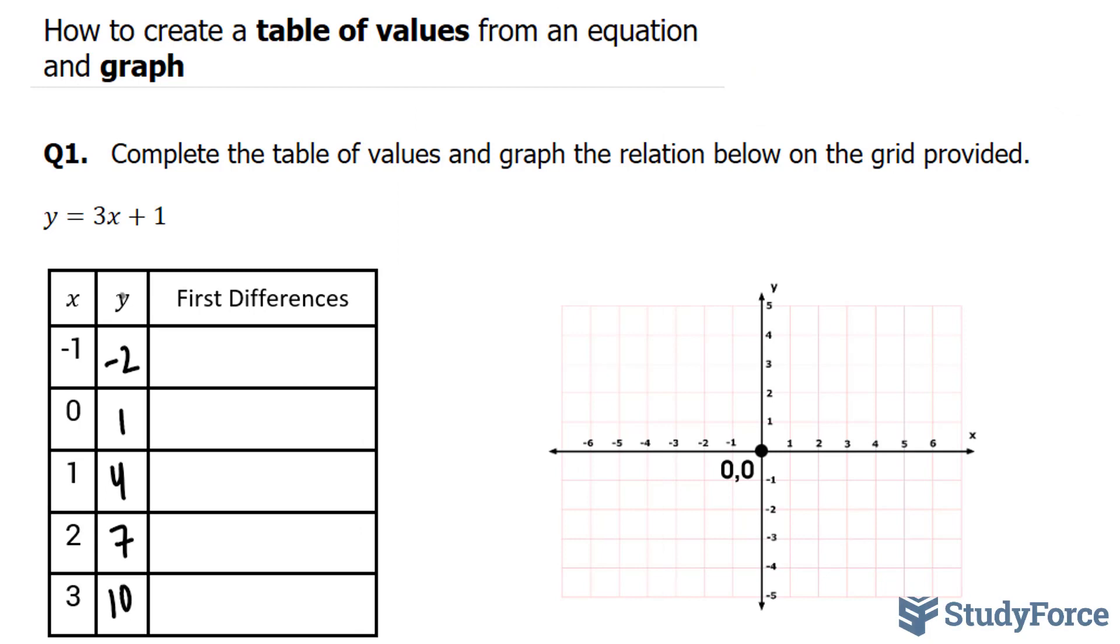And so we have the following outputs for the inputs. The next thing we'll do is find the first differences. To do that, we take every preceding y and subtract it with the previous y. So for this one, we can't subtract this with any other y, so we're going to write down N/A.